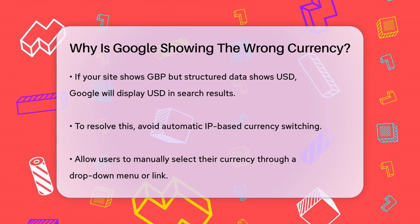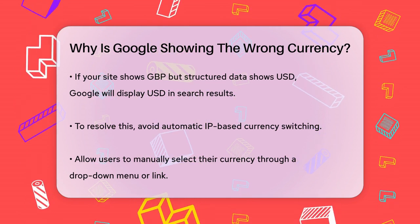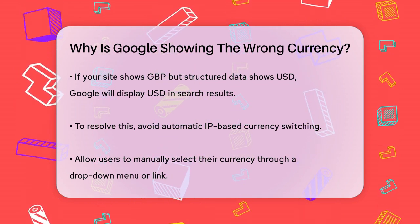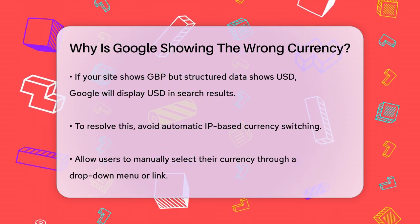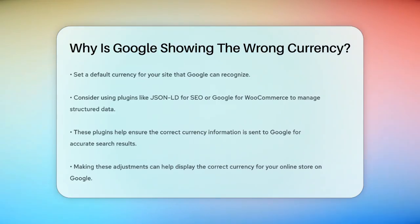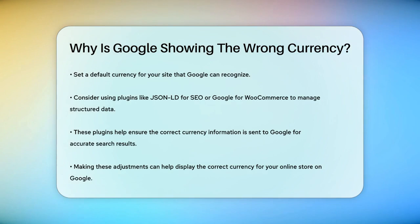Additionally, you can use plugins like JSON-LD for SEO or Google for WooCommerce to control the data sent to Google and ensure the correct currency is displayed. These plugins help you manage the structured data and feed the correct information to Google, so your prices show up correctly in search results.